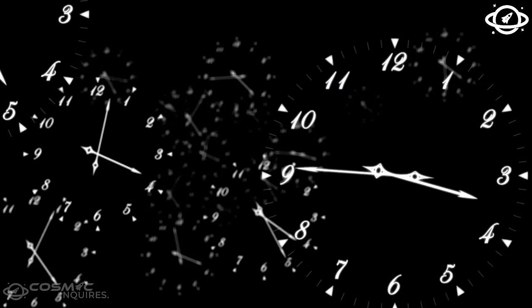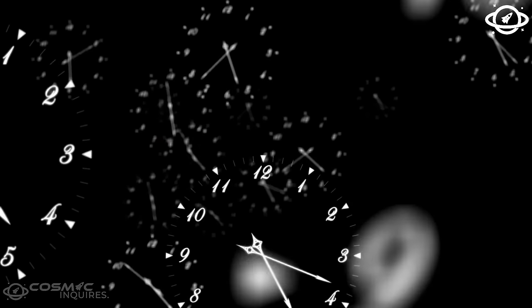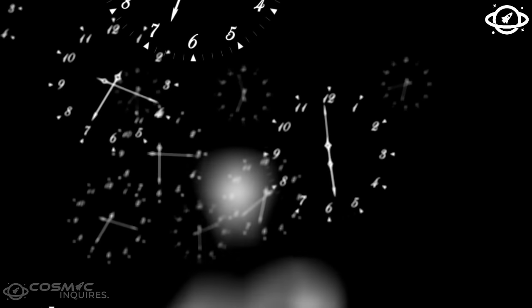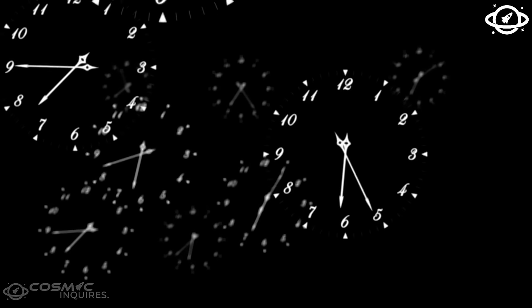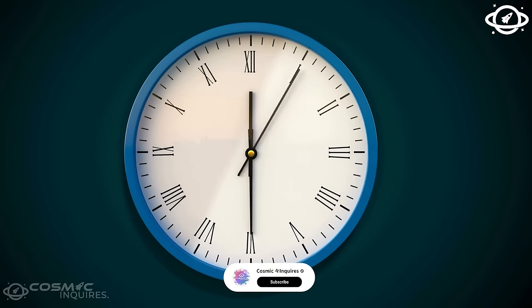Entropy is all around us and its effects are readily observable. For instance, consider a deck of cards perfectly arranged in order. Over time, if we shuffle the cards, they become disordered and random. The initial order had low entropy while the shuffled deck had higher entropy. The spontaneous transformation from order to disorder is a manifestation of the arrow of time.